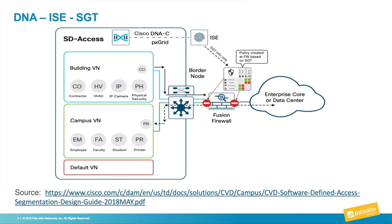With DNA, it's about intent-based networking, pushing policies to the infrastructure based on business intent and with user and device context. ISE provides DNA with user and device context through TrustSec and SGTs, which stands for either security group tags or scalable group tags, depending on who from Cisco you are speaking with.